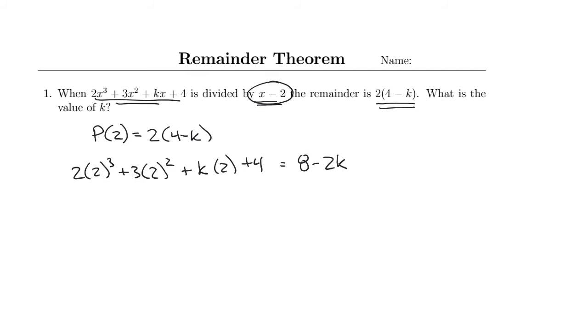Now, evaluate. 2³ is 8 times 2, which is 16. 2² is 4 times 3, which is 12. Then I've got plus 2k and plus 4 equals 8 - 2k.